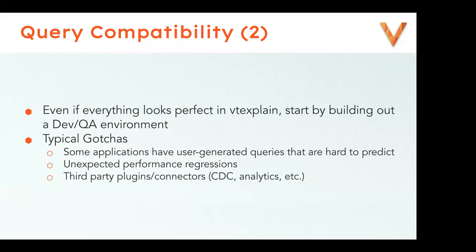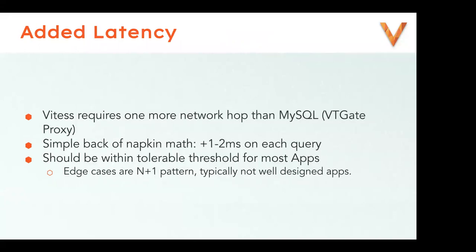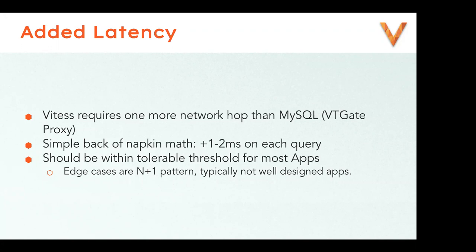Beyond queries, another aspect to consider with Vitess is the additional network latency created by VT gate. If you are already running a load balancer, this should not be too unfamiliar. Under normal circumstances, we expect VT gate to add about one to two milliseconds to your round-trip time. Add another one to two milliseconds if you're introducing a load balancer for the first time. Generally speaking, VT gate by itself adds almost no time at all and may actually speed up your queries thanks to performance enhancements. We consider this additional latency well within tolerable levels for most applications, but if yours is particularly sensitive to latency, it makes sense to spend extra time testing in the dev/QA environment.